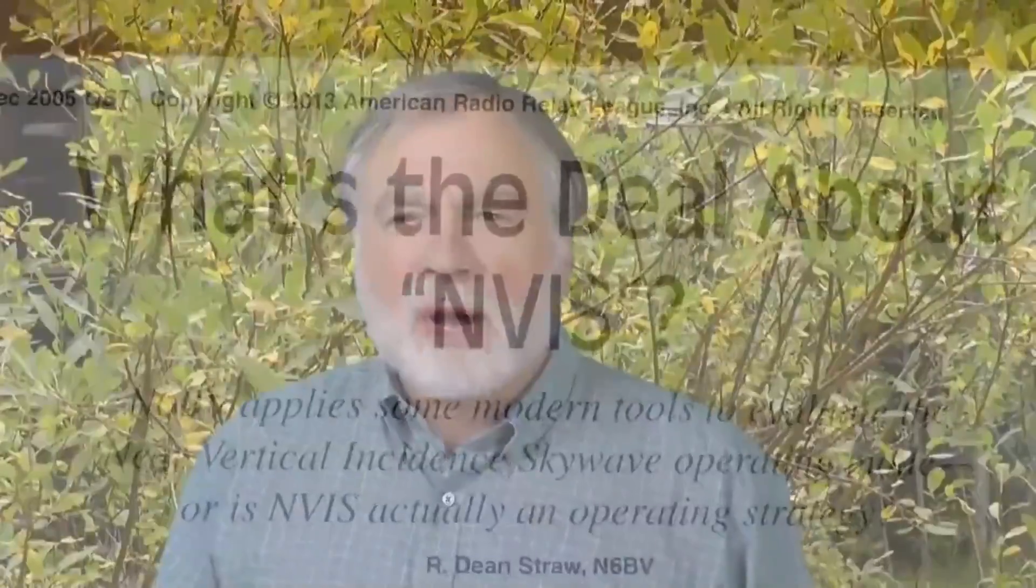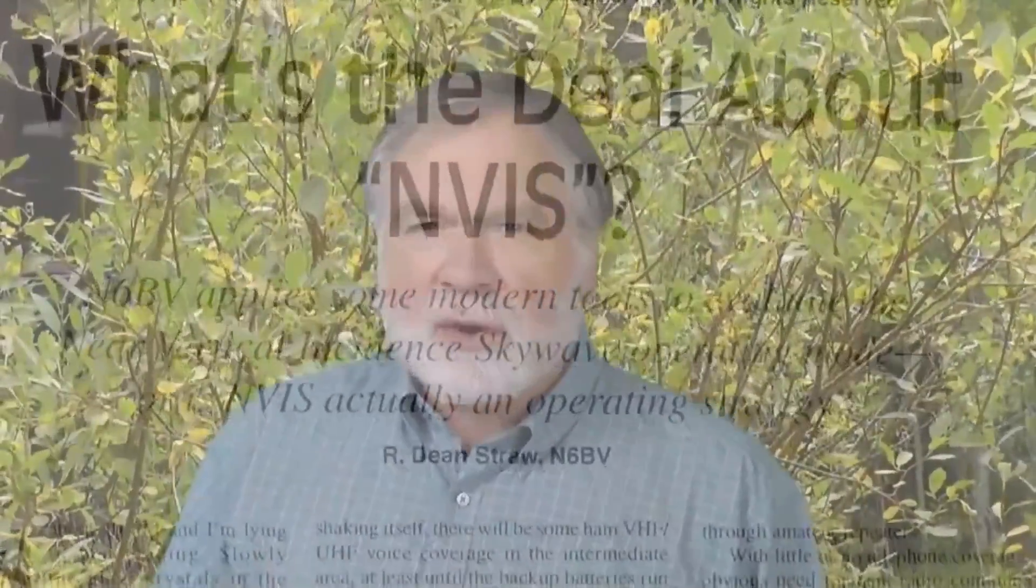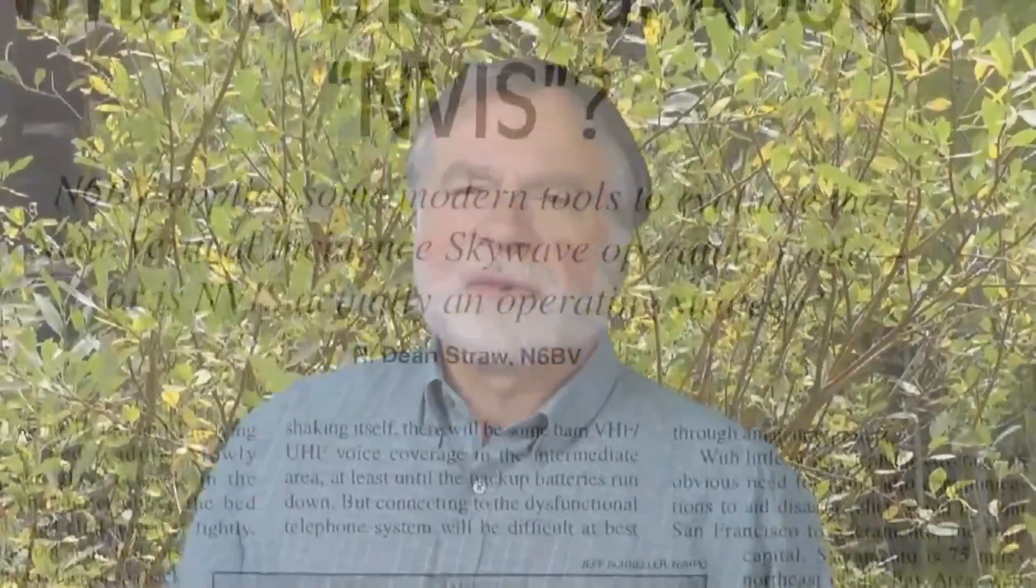The first one we're going to start with is NVIS, which stands for Near Vertical Incidence Skywave Propagation, and that is a mouthful. People were using it for a long time, but the term actually became popular because of a series of QST articles like this one from the May 2005 issue, which talks about NVIS. So let's take a look at that one first. Let's see how it works. And then I think you're going to find that if you put up any HF antenna at all that's horizontally polarized, you're already set.